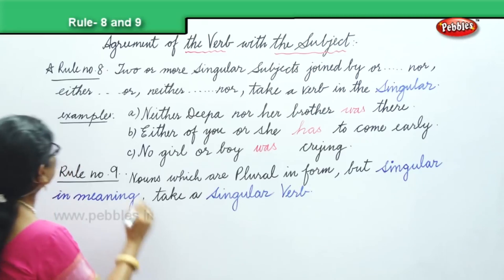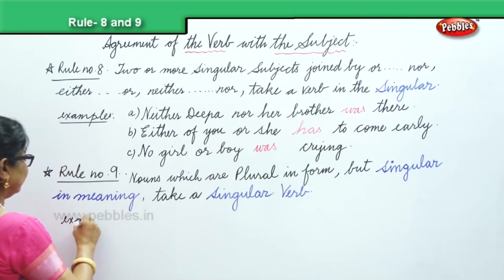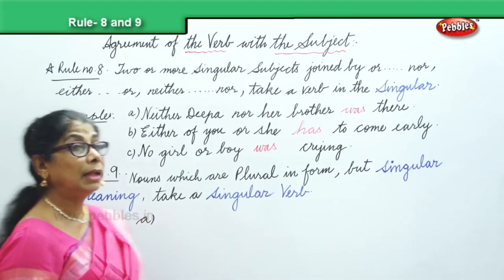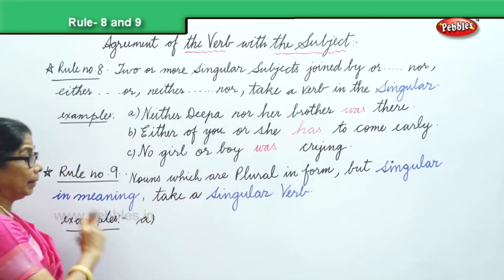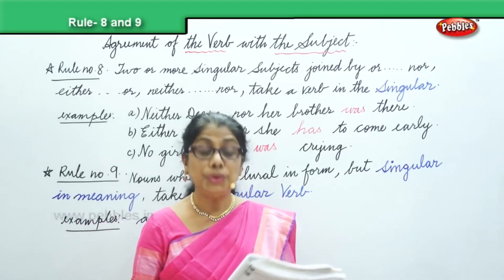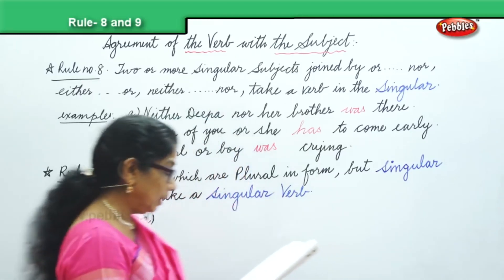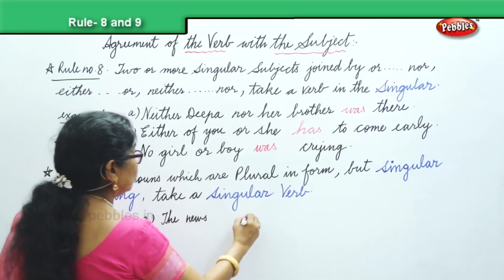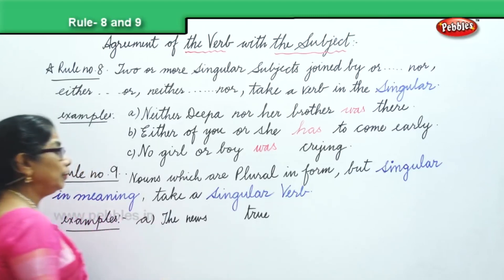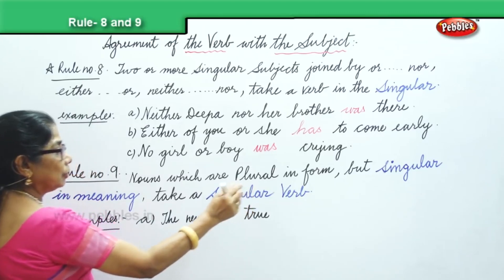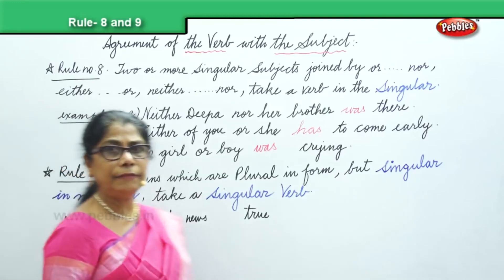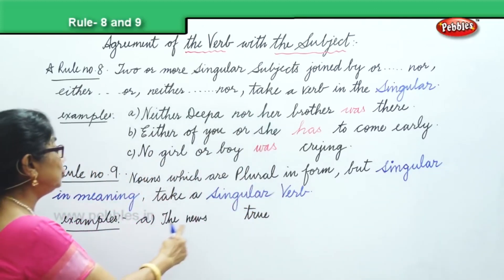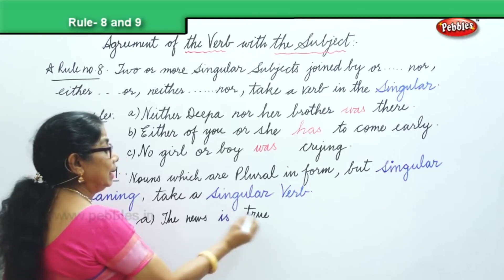Examples for rule nine: 'The news is true.' When you talk about news, all kinds of news — although it's plural in form, it has a singular meaning, so we say 'the news is true.'